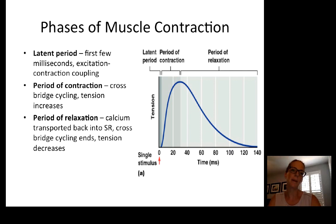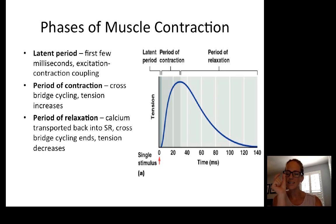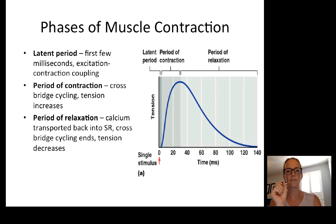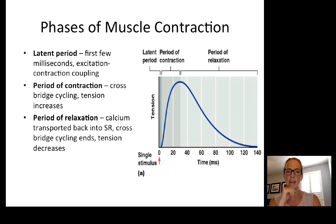Now that we understand how muscles are excited and respond, let's talk about how to get stronger muscle contractions. What we've seen so far is a tiny protein-level contraction. A single sarcomere or single muscle cell contraction — even with many sarcomeres within myofibrils — wouldn't produce any tension or movement. You need many, many muscle cells contracting together to get a successful movement.